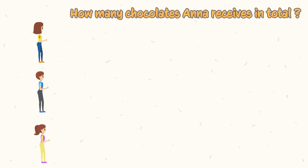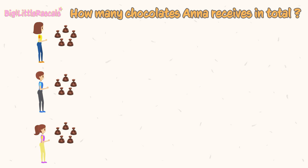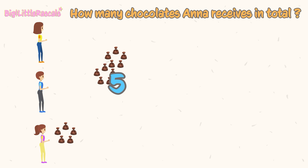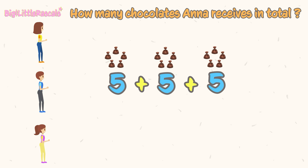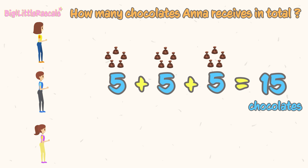How do we calculate this? Let's put on our thinking hat. Three friends, each gives 5 chocolates to Anna. So, 5 plus 5 plus 5 equals 15 chocolates. When we add them, they are 1, 2...